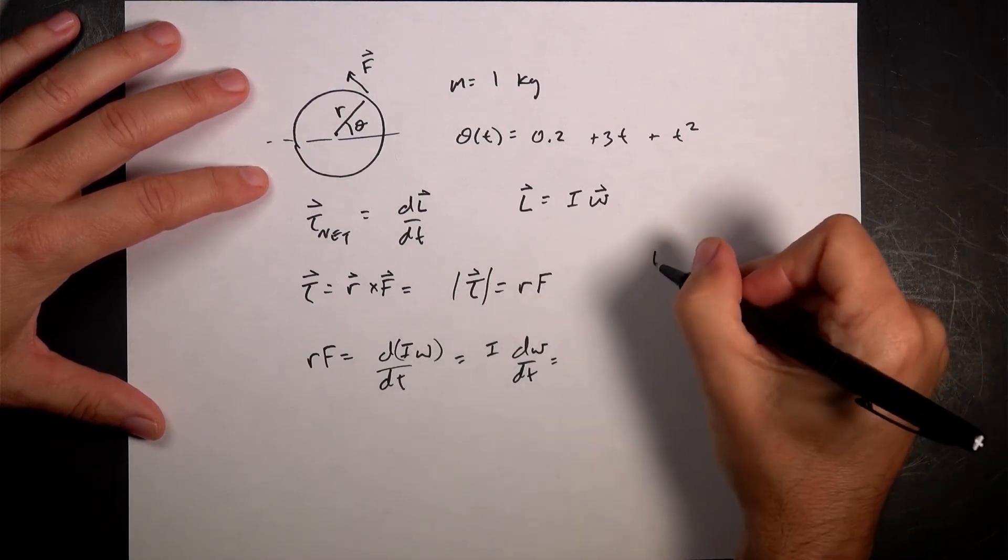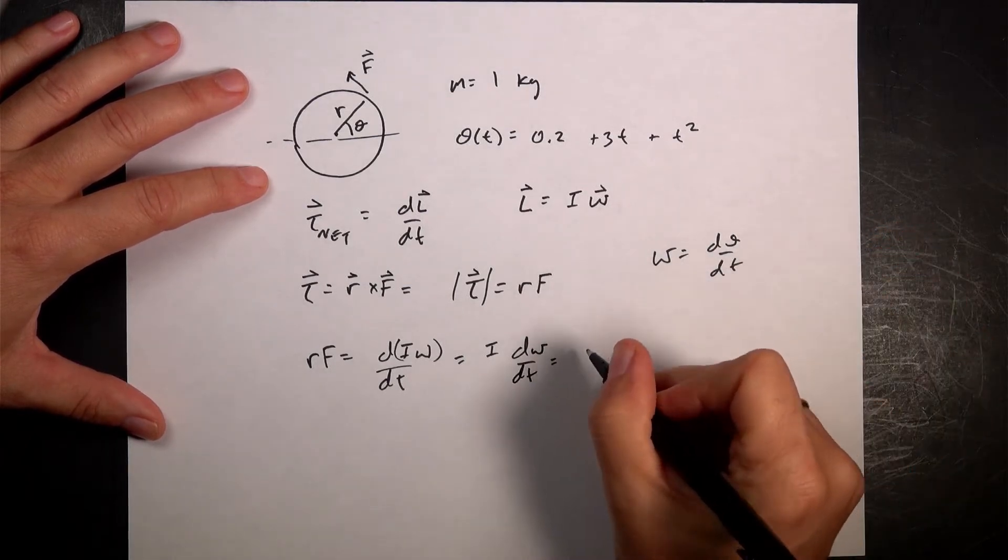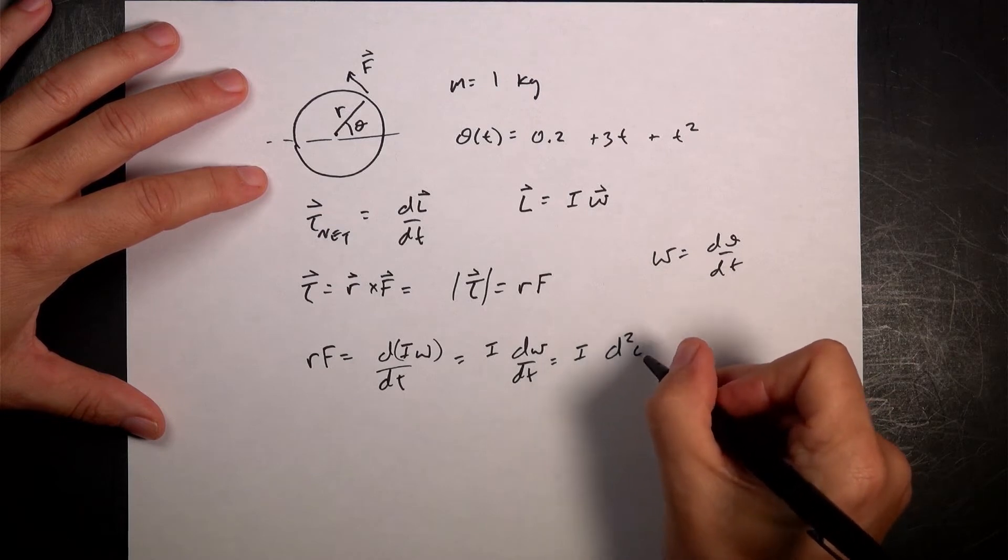Now, the moment of inertia does not change. So I can pull that out. And I get i d omega dt. And this, remember that omega is d theta dt. So this is going to be equal to i, the second derivative of theta. That's a theta with respect to t.